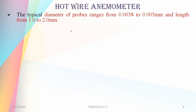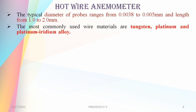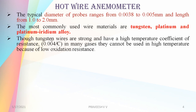The most commonly used wire materials are tungsten, platinum, and platinum-iridium alloy.